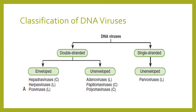DNA viruses can be classified into double-stranded or single-stranded DNA viruses. For double-stranded DNA viruses, they can be enveloped or unenveloped. Enveloped double-stranded DNA viruses include hepadnaviruses, herpesviruses, and poxviruses. Unenveloped double-stranded DNA viruses include adenovirus, papillomavirus, and polyomavirus. For single-stranded DNA viruses, there is only one member: the unenveloped parvovirus.